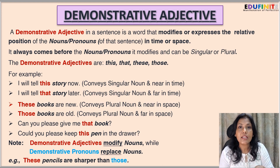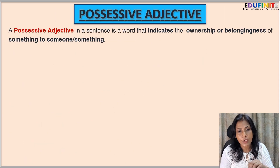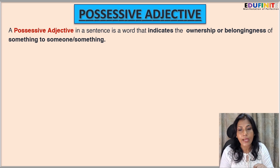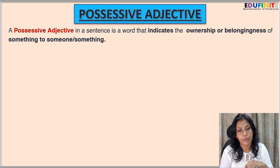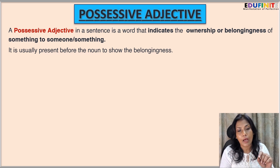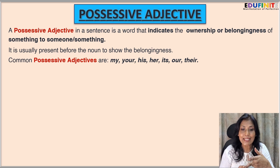The next type is possessive adjective. A possessive adjective in a sentence is a word that indicates the ownership or belongingness of something to someone or something. It is usually present before the noun to show belongingness. Common possessive adjectives are: my, your, his, her, its, our, their.